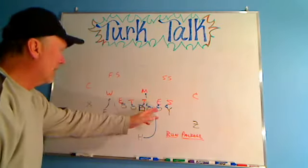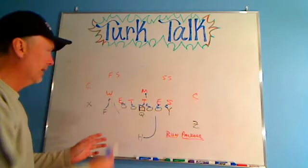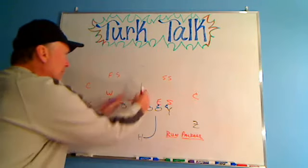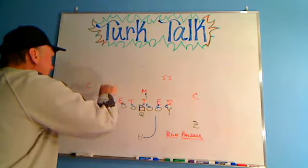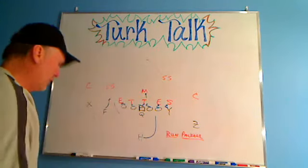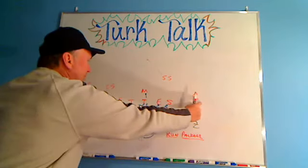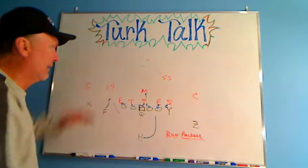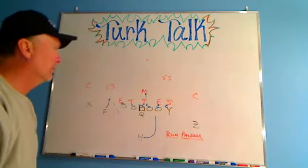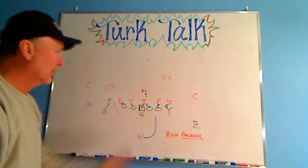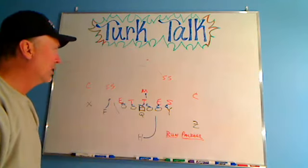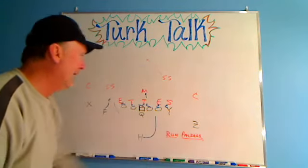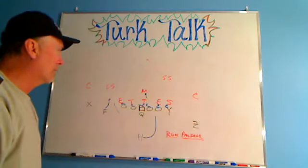Those are the three situations: weak side zone, strong side inside zone, or power against six in the box. If you get seven in the box, they've got one more than you can block, so you get out of it and go to a pass — because with seven in the box they've only got four that can cover. One quick game you'd have is a slant by the outside guys with flats by the inside guys — great combination against middle field closed, whether it's man or zone. You might also have a vertical route in case you get man coverage, to take a shot downfield. So you've got quick pass and vertical pass to go with your three run plays — six in the box you run, seven in the box you throw.